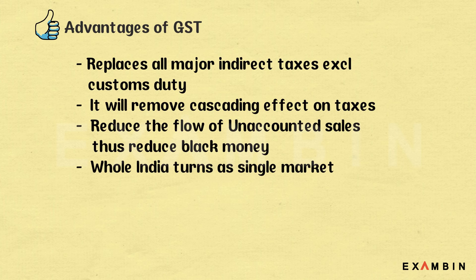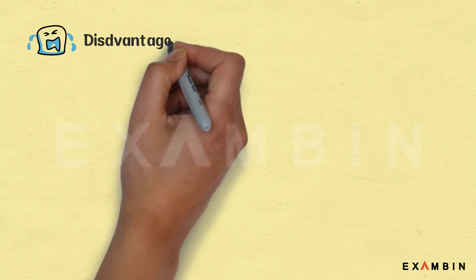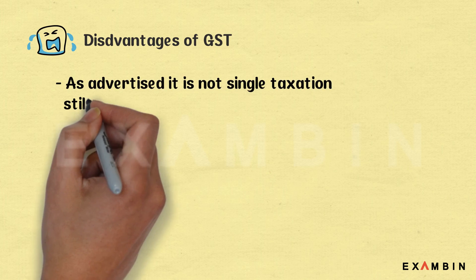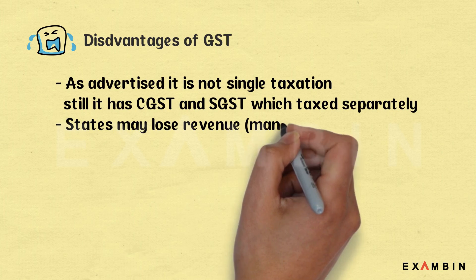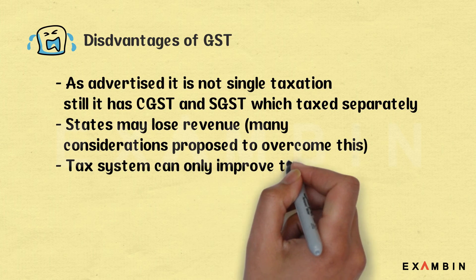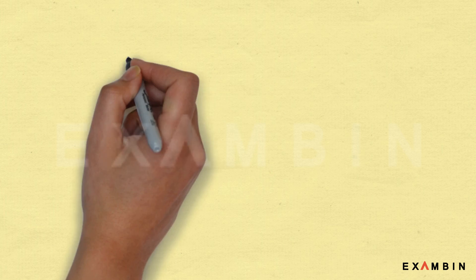The whole of India turns into a single market because GST applies everywhere, and it is projected as a game changer. However, it has a few disadvantages: as advertised, it is not truly a single taxation — it still has CGST, SGST, and IGST taxed separately. States may lose revenue, and many considerations are needed to overcome this. A tax system can only improve the nation on paper; real growth does not depend upon taxation methods alone.